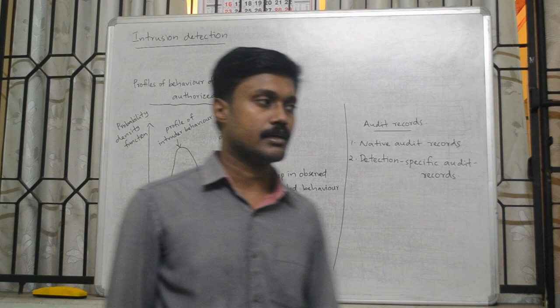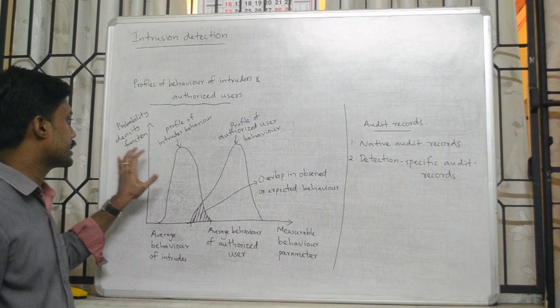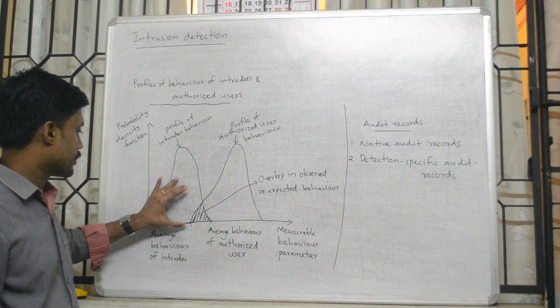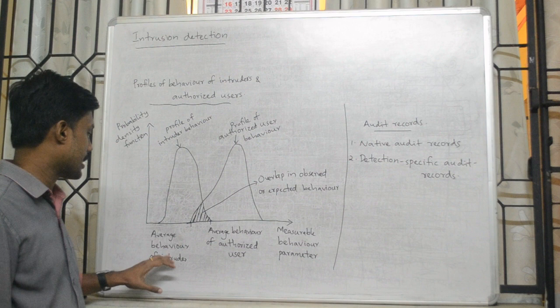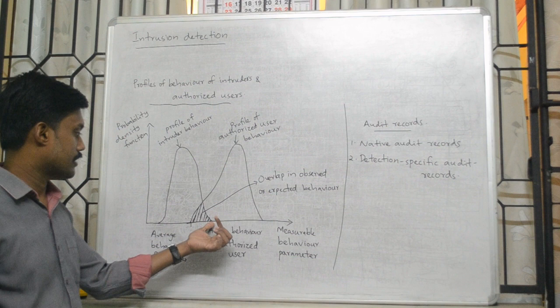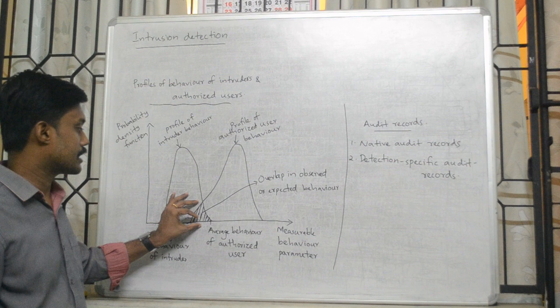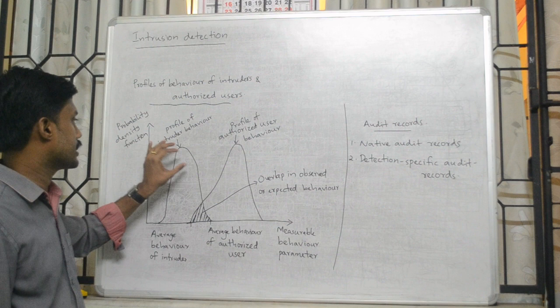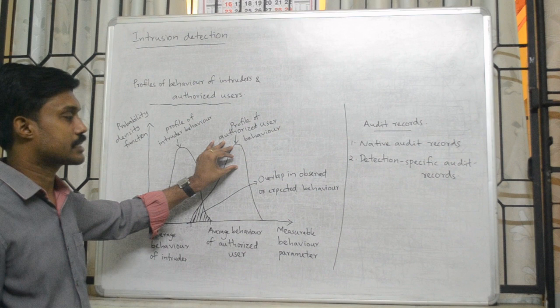The measurable behavior parameter and the corresponding probability density function — plot a graph. This is the corresponding value of an intruder. This is the average behavior of an authorized user. In a particular area, it is transparent. In a particular area, we can see that the behavior of an intruder, the peak of an authorized user, or the probability density function.